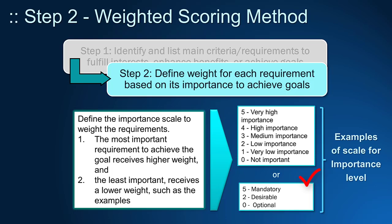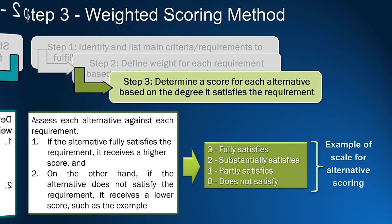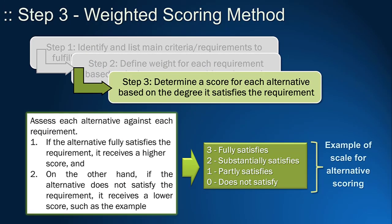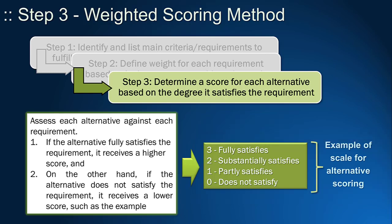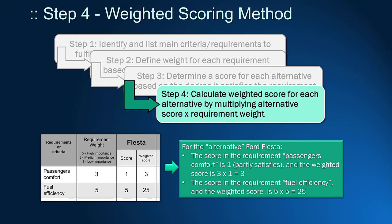During step three, you should focus on one alternative in the columns each time and evaluate it on each requirement in the rows. For instance, you may ask: does the alternative satisfy the requirement? In our example, we could have said: does Fiesta satisfy comfort requirements? The answer will naturally lead to a score.